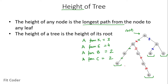These four are leaf nodes: K, E, B, and C. The distance of A is maximum from E, so the height of A is 4. We calculate the distance of a node from all leaf nodes and find the maximum — that is the height of that node. And the height of the tree equals the height of its root, so the height of this tree is 4.